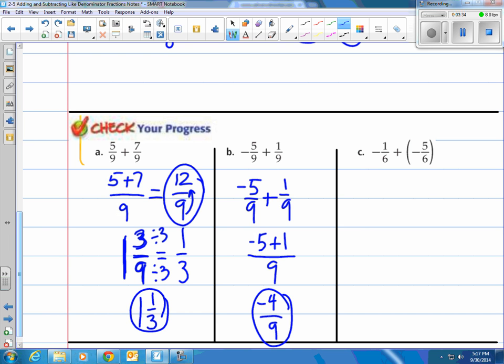How about negative 1 sixth plus negative 5 sixth? Well, negative 1 sixth plus negative 5 sixth. Bottoms are the same. Put together the tops. Negative 1 plus negative 5. Hey, that equals negative 6, actually, all over 6. Negative 6 over 6 is negative 1. That's what it equals.